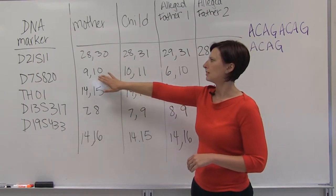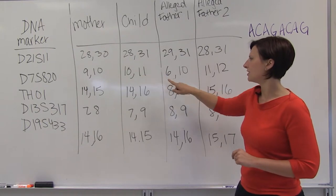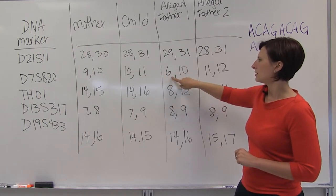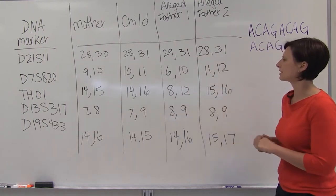So we look at the second locus. The mother is 9 and 10. The child is 10 and 11. The alleged father 1 is 6 and 10, and alleged father 2 is 11 and 12.